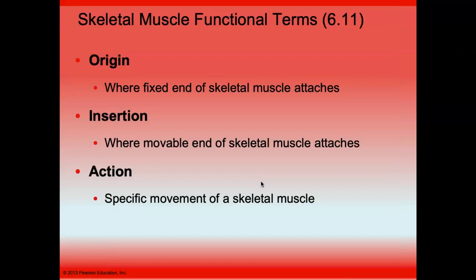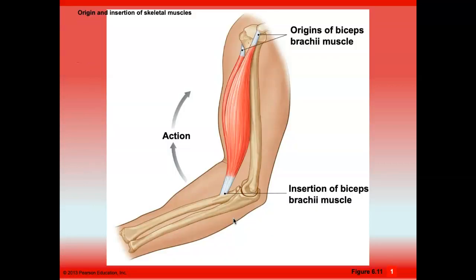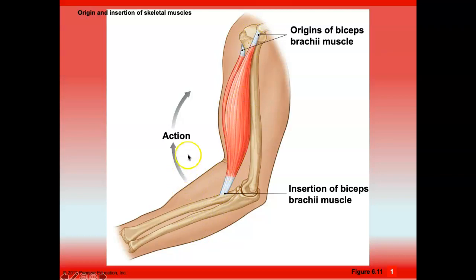Where a skeletal muscle is attached and does not move is called the fixed end — the origin. Where the skeletal muscle attaches to the movable end is the insertion, and the action is the specific movement produced. For example, a muscle crossing the elbow joint gets shorter, pulling the arm up.